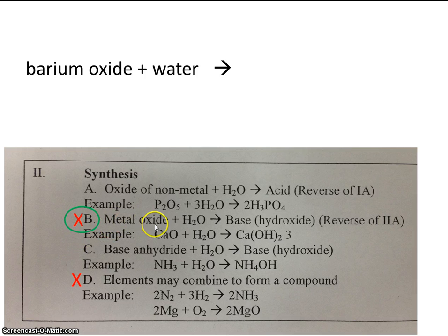So, a metal oxide plus water is going to make a metal hydroxide. In this case, it made calcium hydroxide. But, of course, we're not going to make calcium hydroxide over here, because the metal we're dealing with is barium. So, what metal hydroxide do you think will be formed from barium? Of course, it's barium hydroxide.